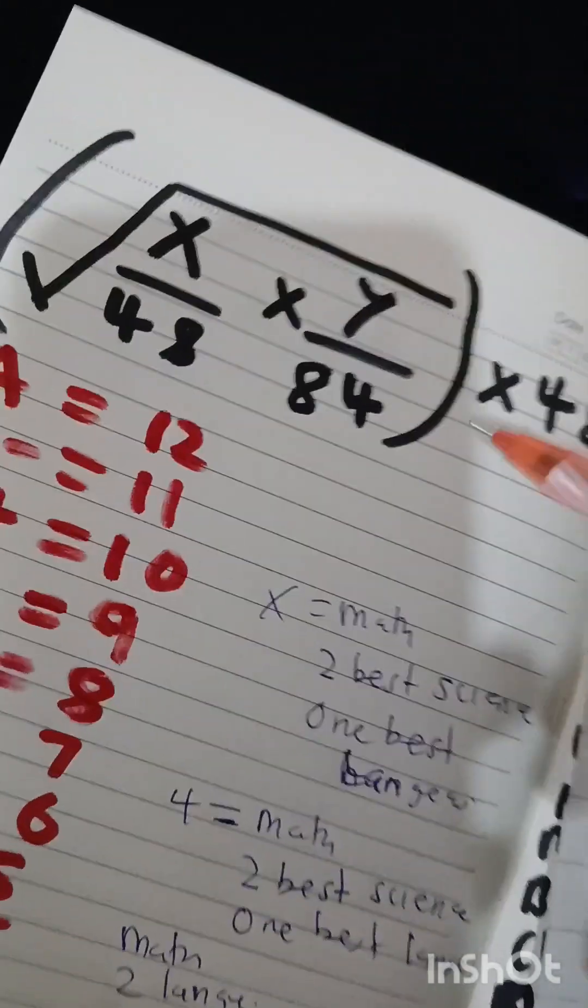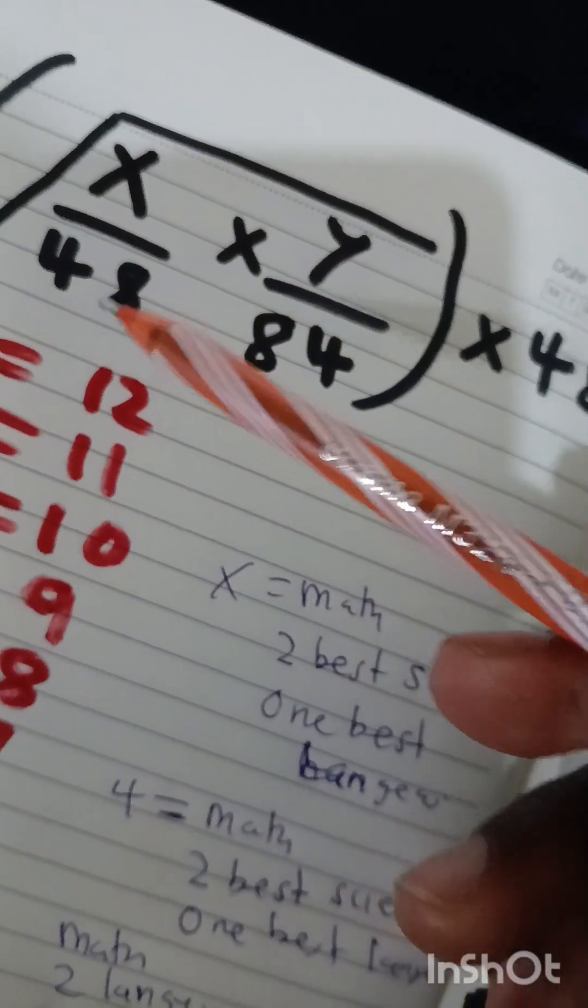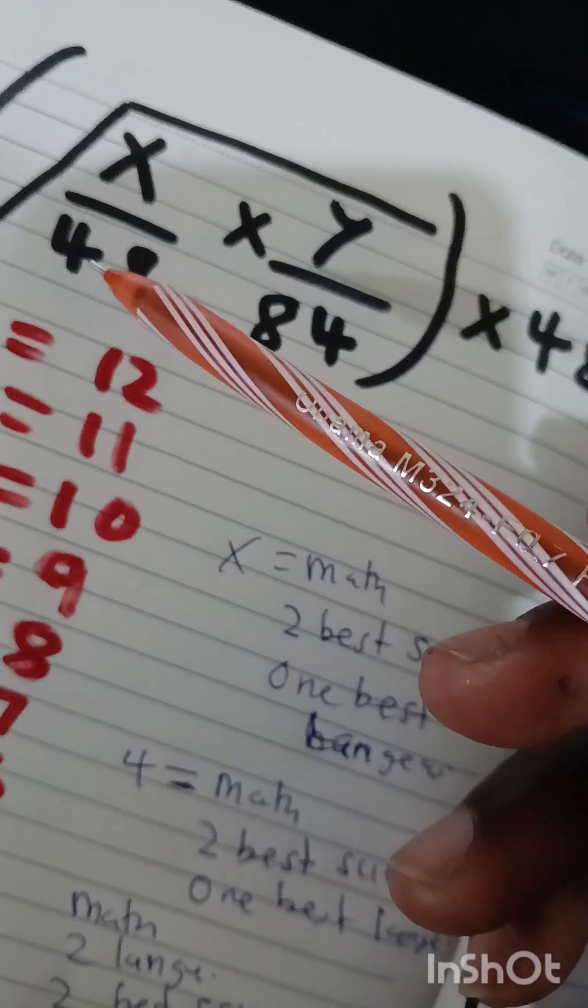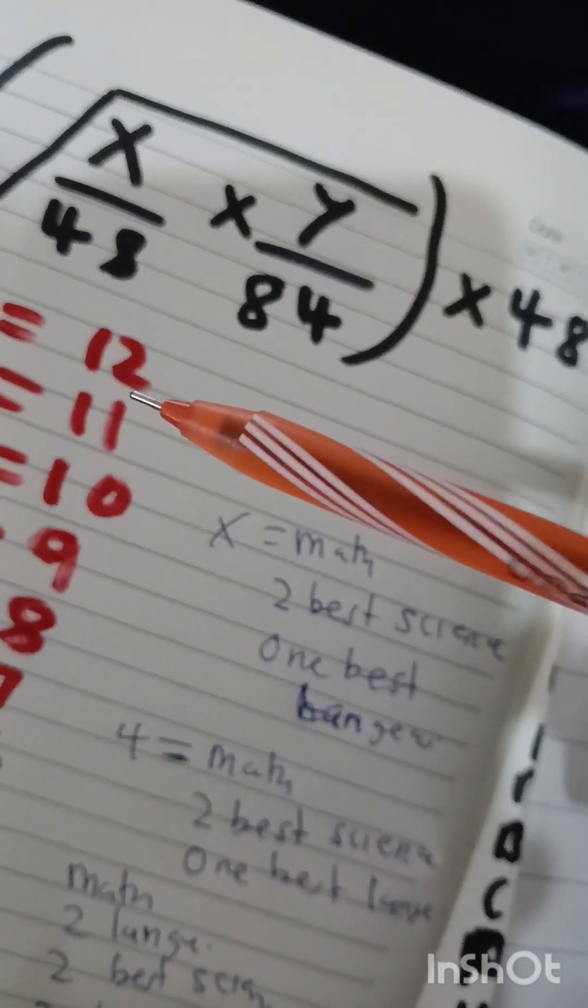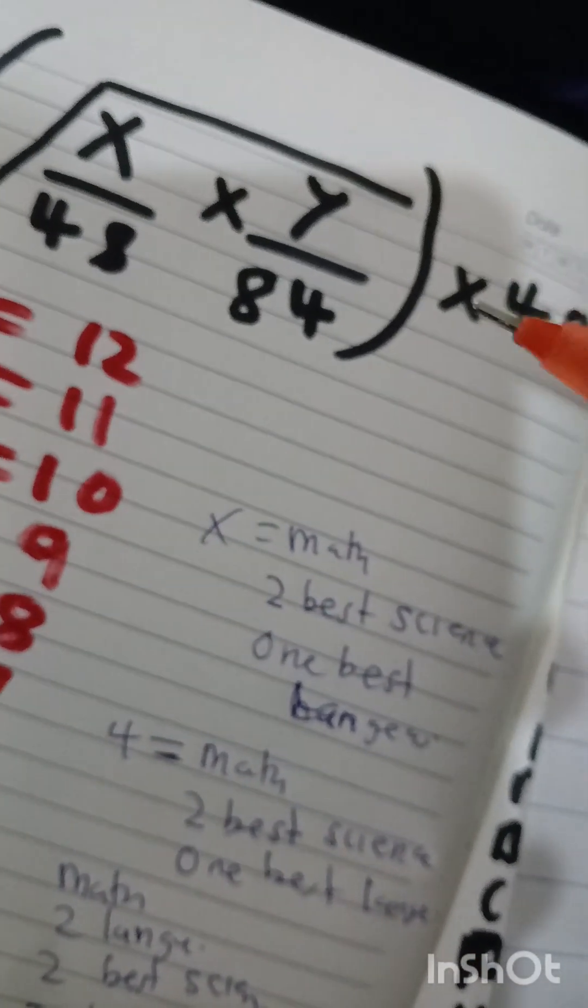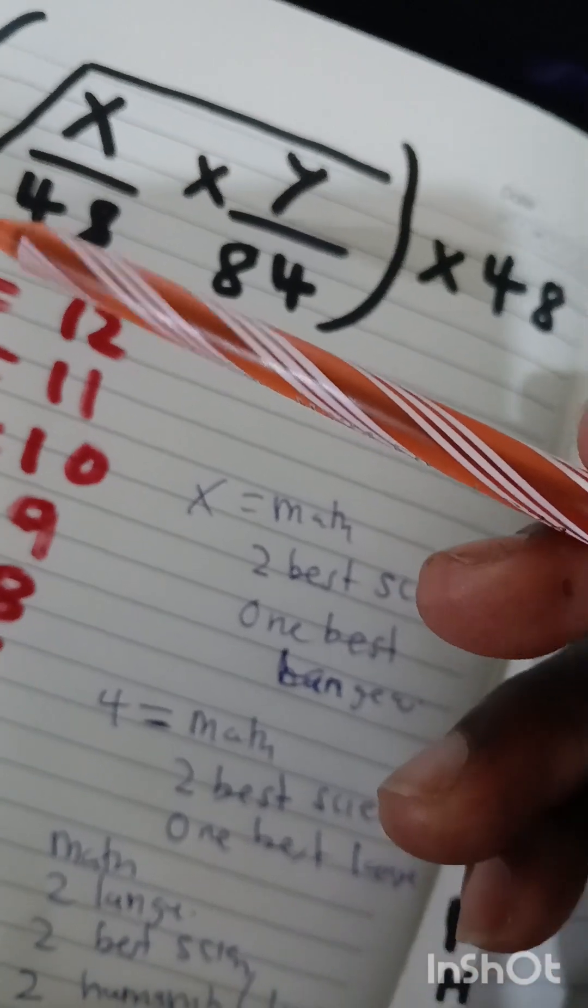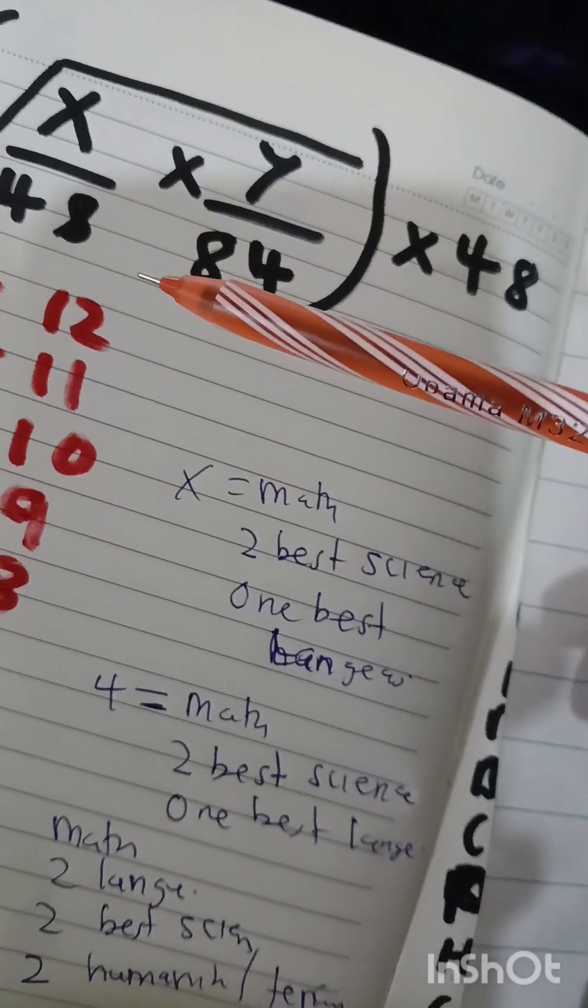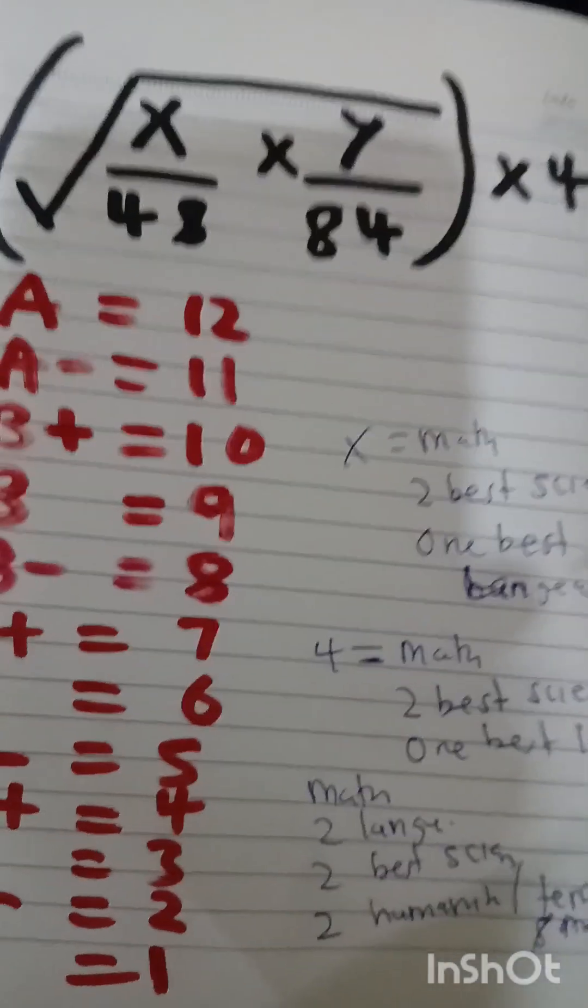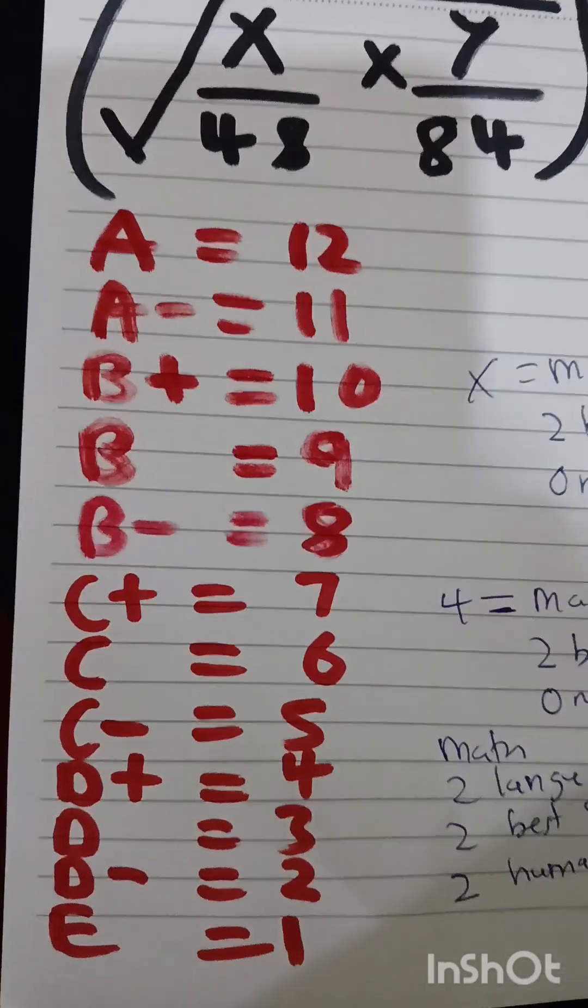So 48 represents the total points of four subjects. Each subject can have higher points of 12, so 12 by 4 you get 48. Then here, 12 by 7 you get 84.